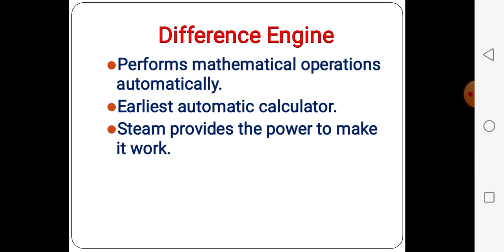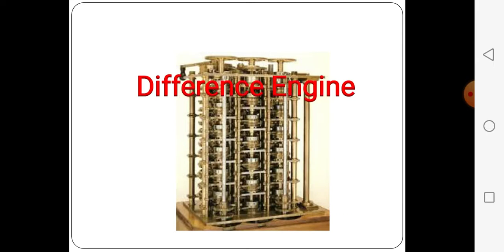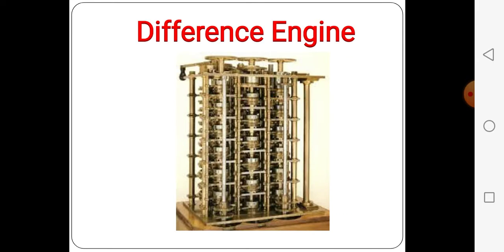Steam provides the power to make it work. Nowadays in a computer, electricity provides the power, but at that time the Difference Engine used steam as power to make it work. And then Charles Babbage did some more work on the Difference Engine. This is the picture of the Difference Engine. This is not a completed machine like a computer CPU, but the Difference Engine could do operations automatically and calculate.